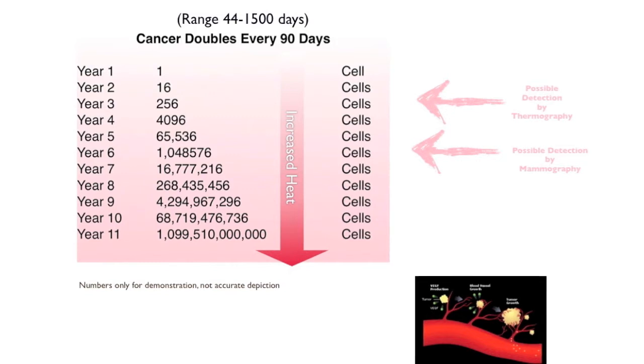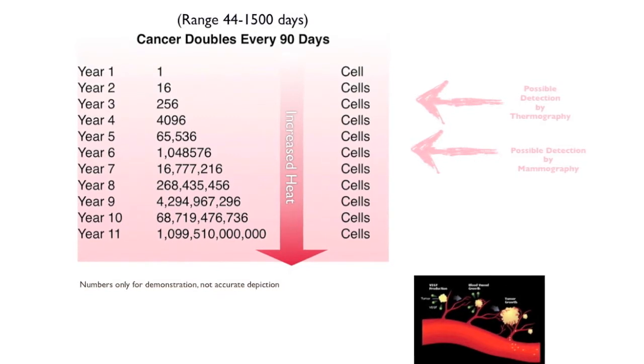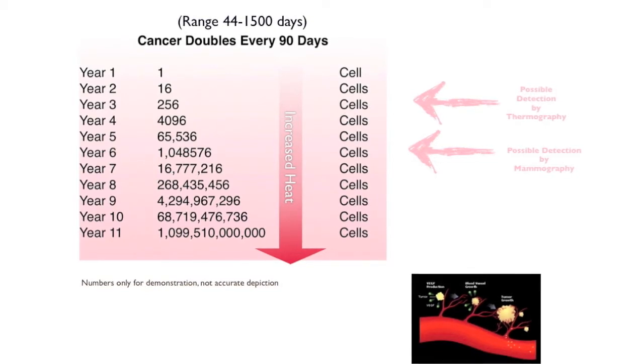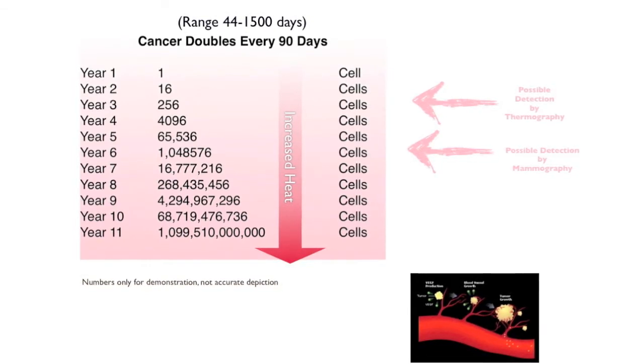As you can see in year one, you start out with one cell. It doubles every three months, so by the end of year two we have 16 cells and it exponentially grows in years three, four, five, and so on.